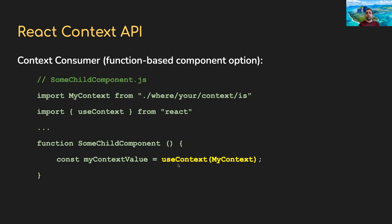For functional components, useContext — you need to import it from React, just like useState and useEffect. You simply pass it your context object and it will spit out the value that the context is holding onto. So useContext(MyContext) will return the string 'something' stored into MyContextValue.